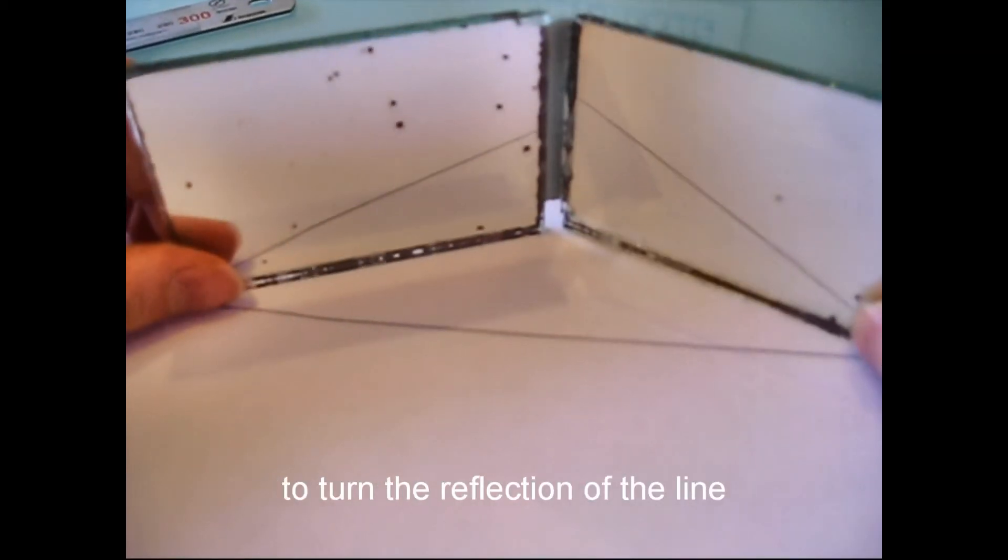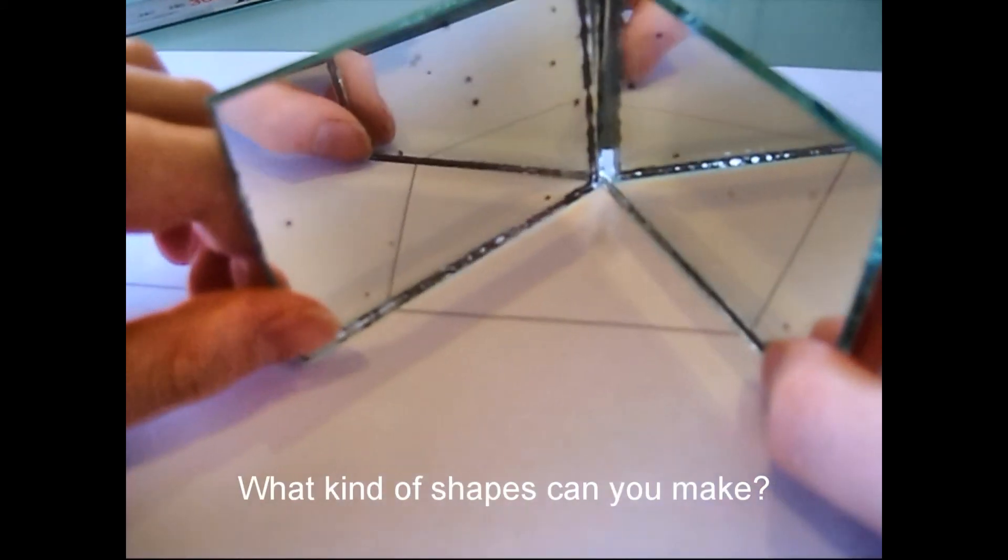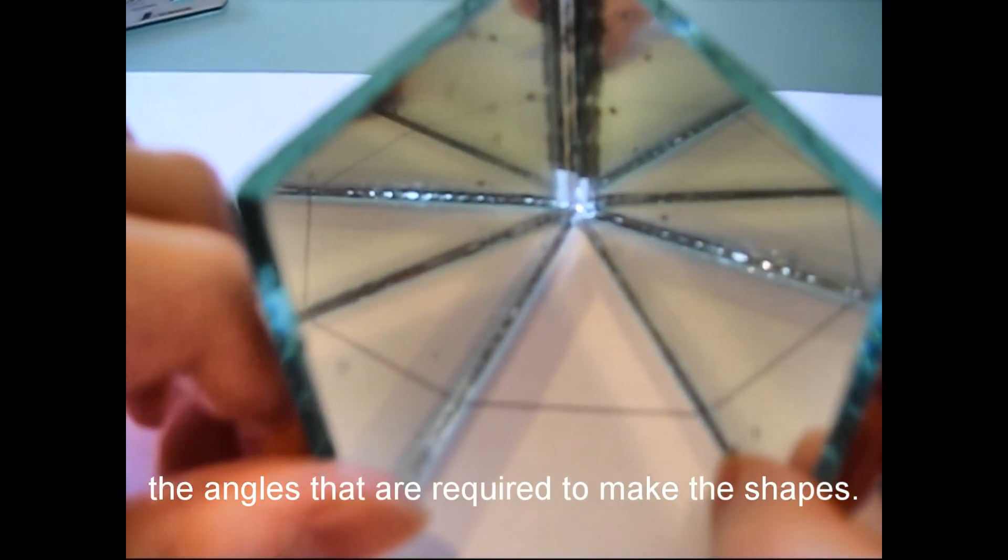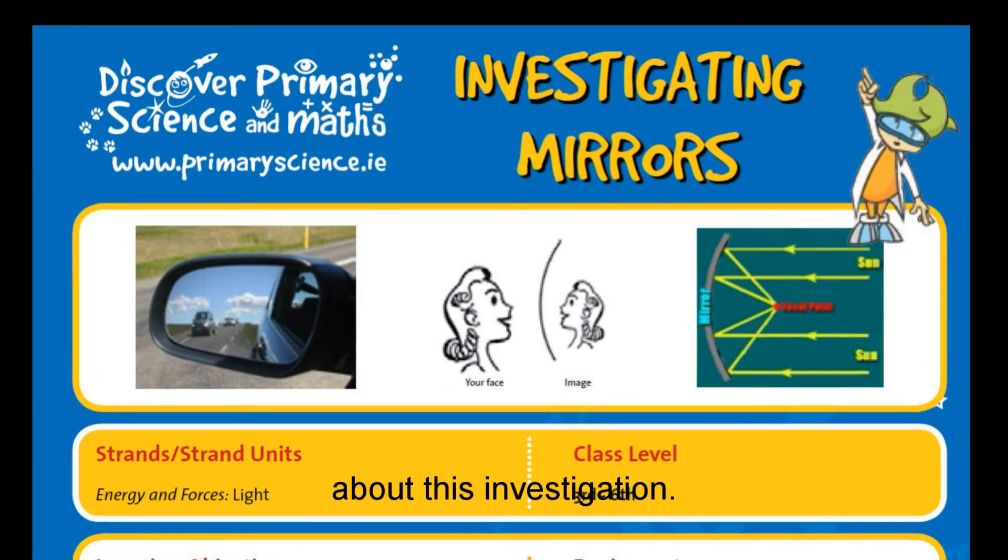Can you change the angle of the mirrors to turn the reflection of the line into different shapes? What kind of shapes can you make? You could also use a protractor to record the angles that are required to make the shapes. Look at the activity sheet for further information about this investigation.